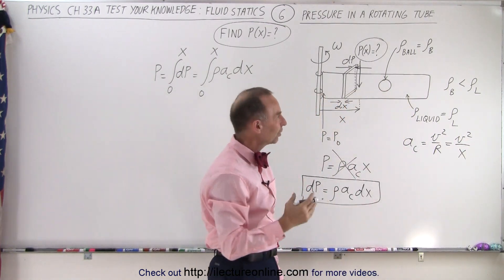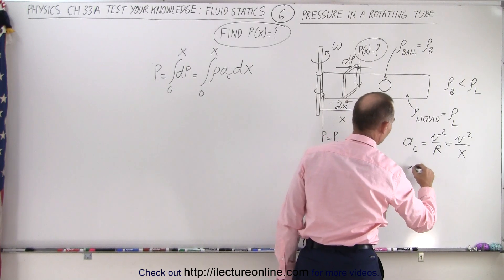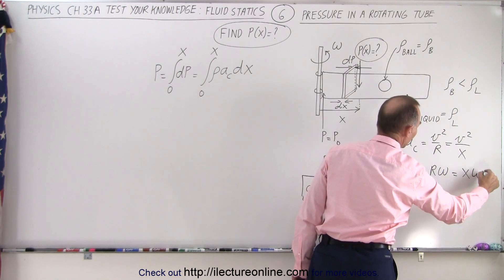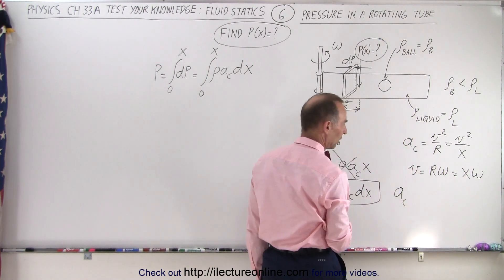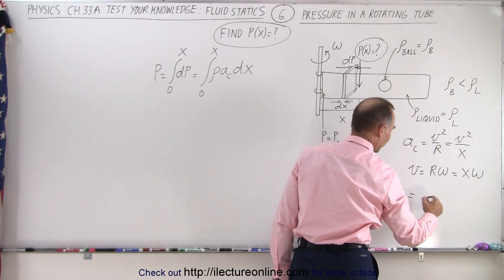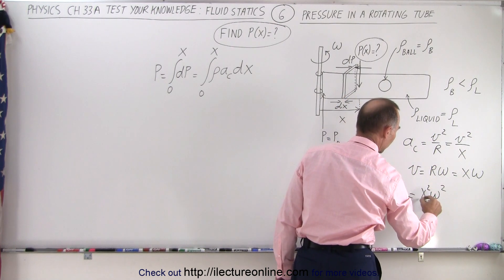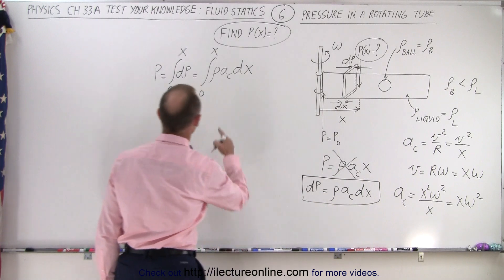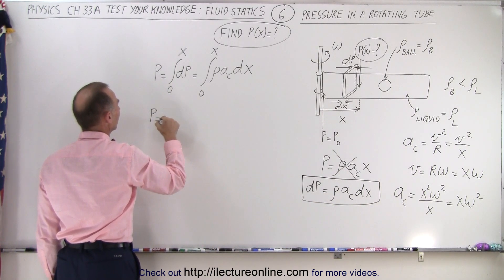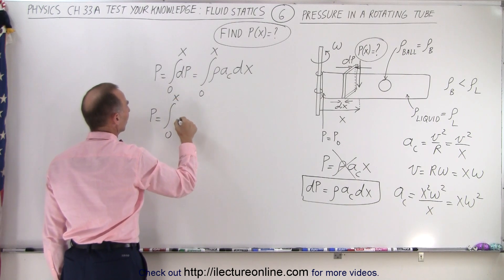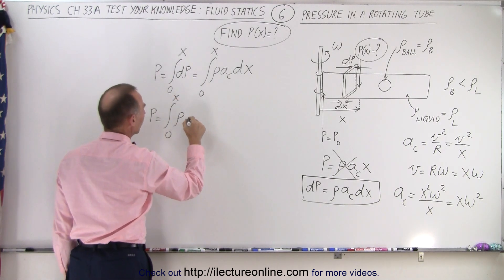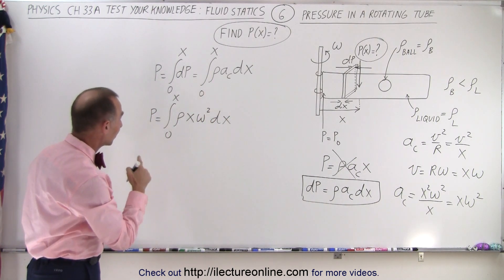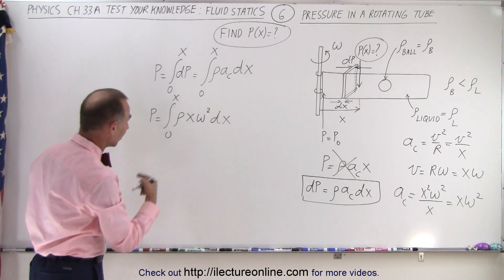What is v? We know that v equals the radius r times omega, and in this case the radius is x, so v equals x times omega. That means the centripetal acceleration can be written as v² over x, which is x² times omega² divided by x, which equals x times omega squared. That result is then plugged into our equation, so the pressure equals the integral from zero to x of the density times x times omega squared times dx. Since density and omega squared are constants, we factor them out.